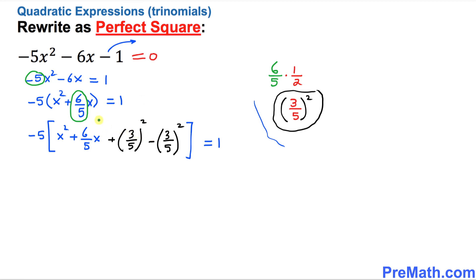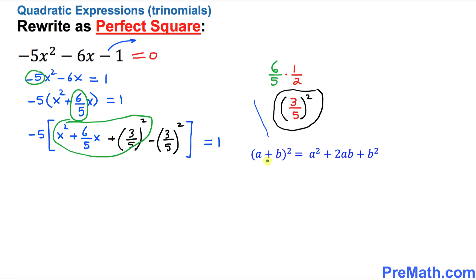Now I want you to focus only on the circled part. This represents a complete square. We are going to use the well-known formula: (a + b)² = a² + 2ab + b². So x² + 6/5 x + (3/5)² can be written as (x + 3/5)².